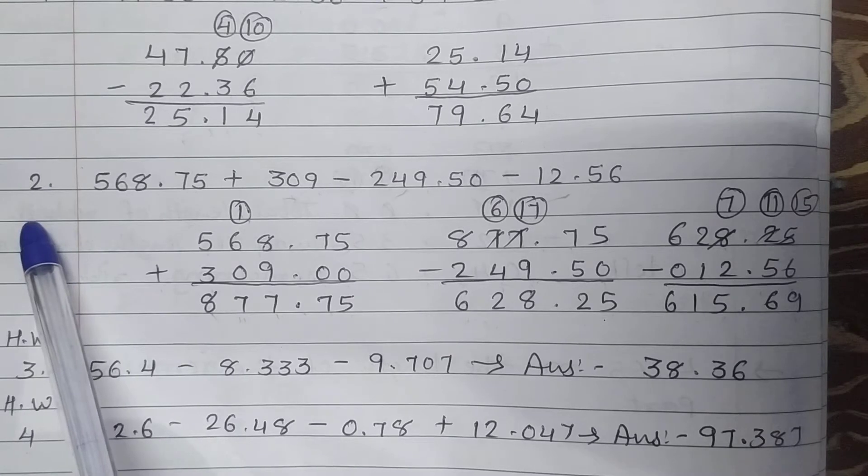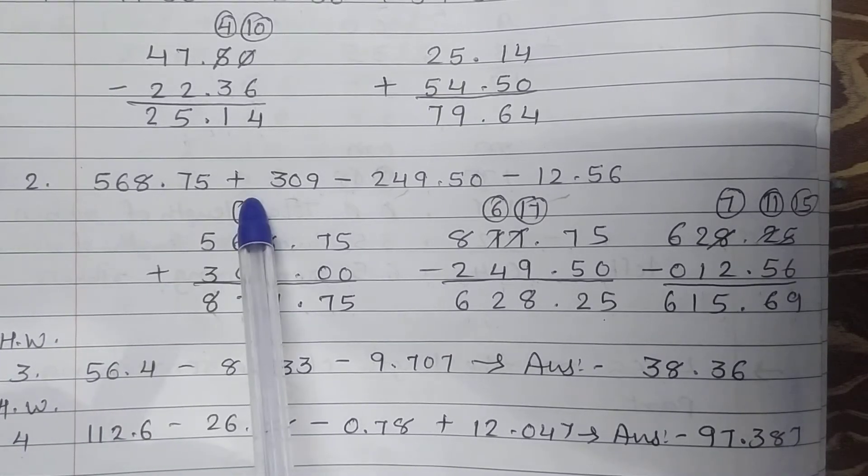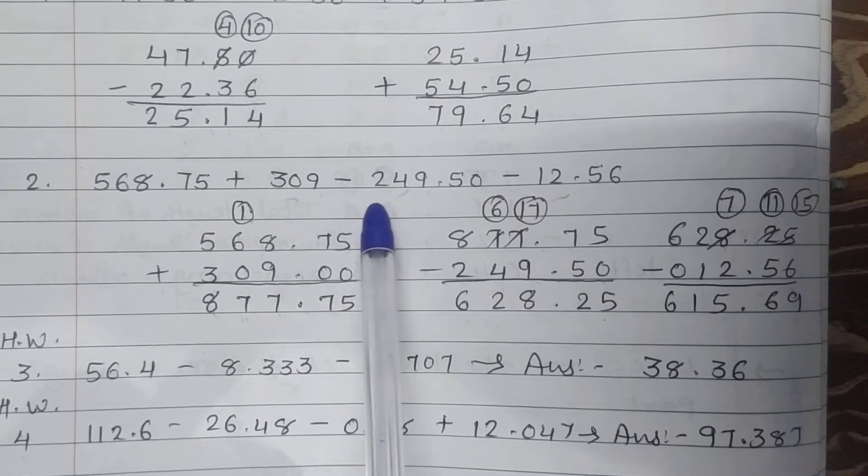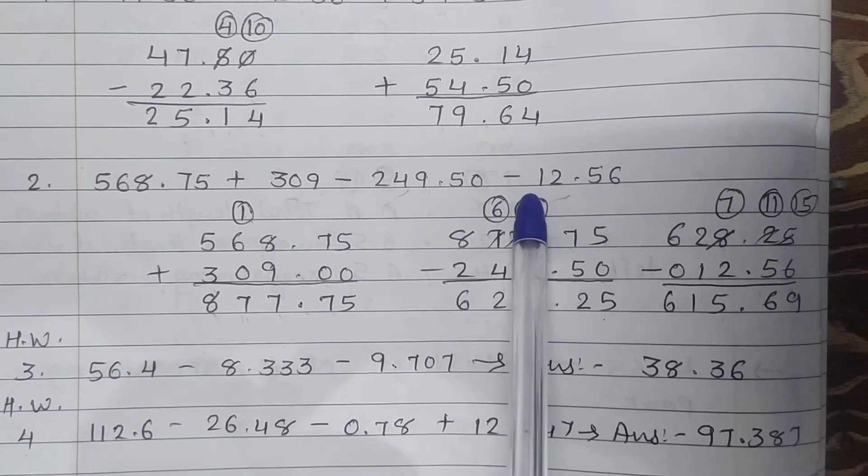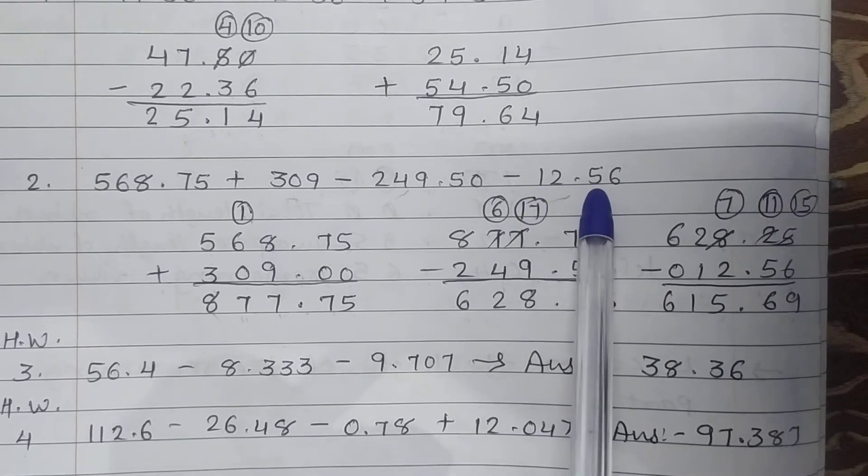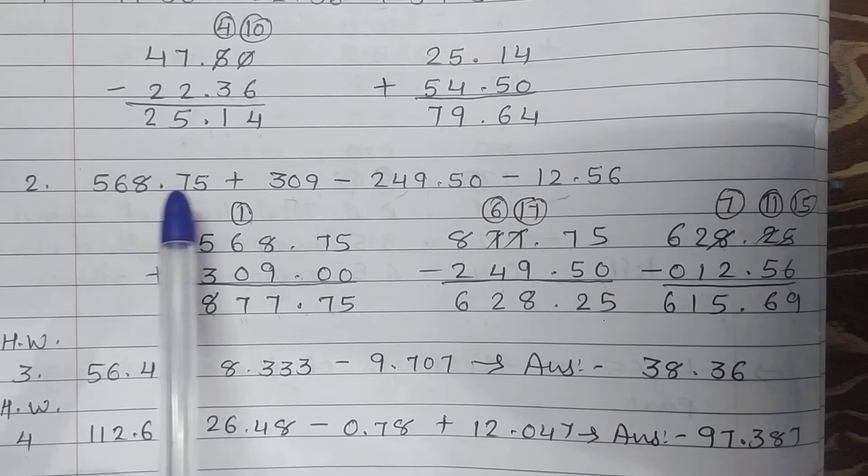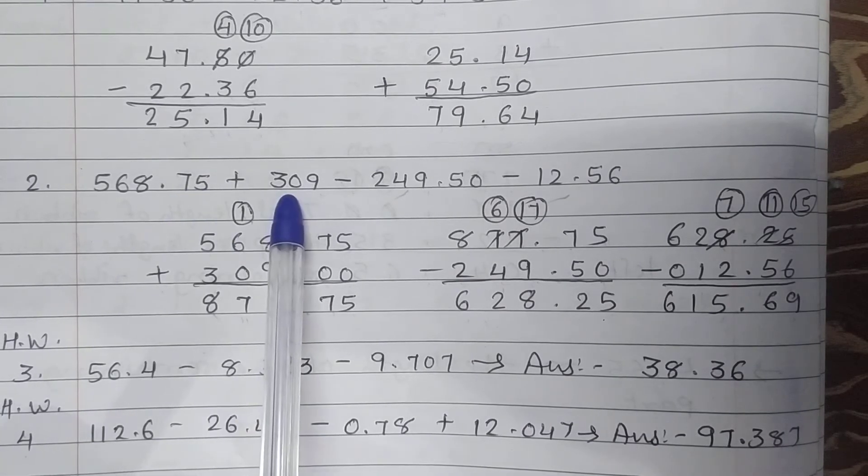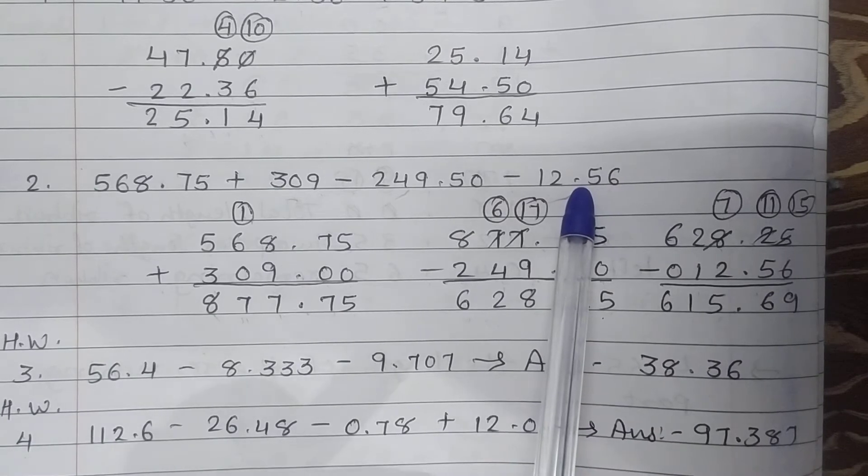Next, second: 568.75 plus 309 minus 249.50 minus 12.56. Now students, first of all we will do addition between these two numbers, then we will subtract this number, then we will subtract 12.56.